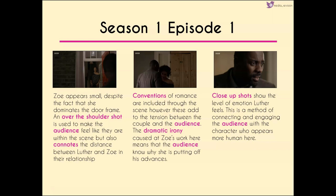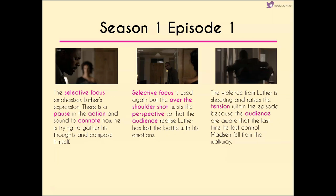Close-up shots show the level of emotion that Luther feels — a method of connecting and engaging with the audience, who see him as more human and may relate to what's going on in his personal life. Selective focus emphasizes his expression, with a pause in action and sound suggesting he's trying to gather his thoughts and compose himself. We start to realize Luther has lost the battle with his emotions. Even though the violence that comes from him in that third shot is really shocking, it raises tension again — the last time he lost control, Madsen fell from the walkway. We know that when Luther loses control, bad things happen.